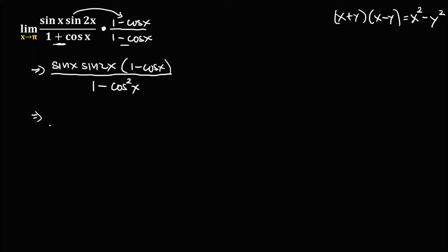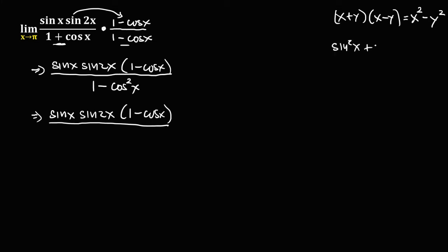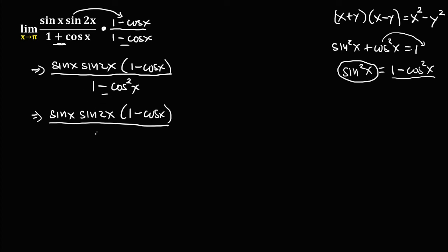Then simplify. We have sin(x) times sin(2x) times 1 minus cosine(x) over 1 minus cosine squared(x). Using the Pythagorean identity — sine squared(x) plus cosine squared(x) equals 1 — we transpose cosine squared(x) to get 1 minus cosine squared(x) equals sine squared(x). So the denominator becomes sine squared(x).